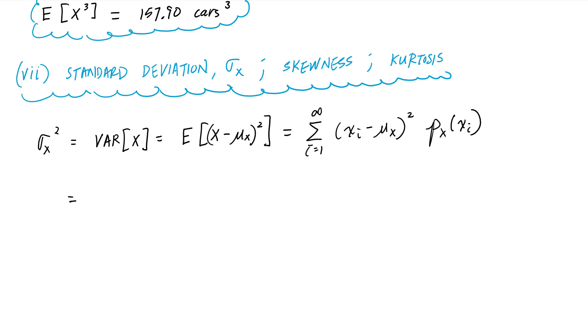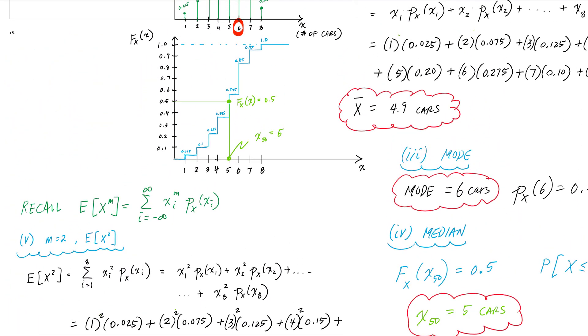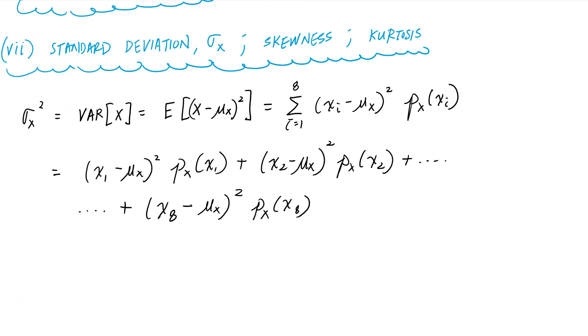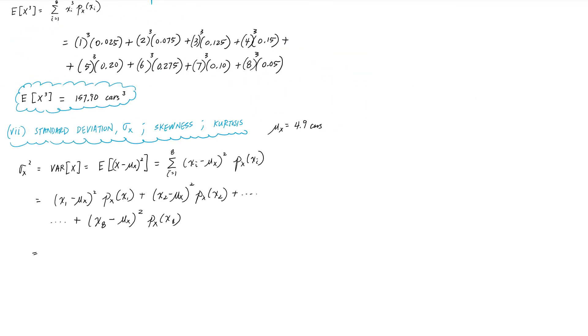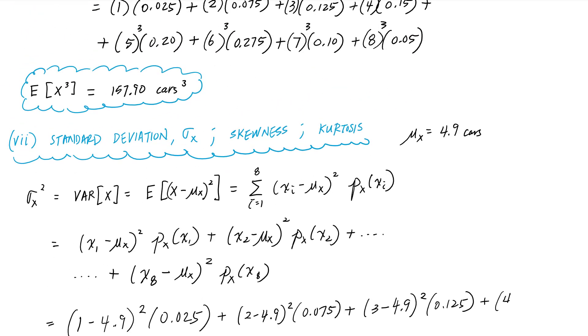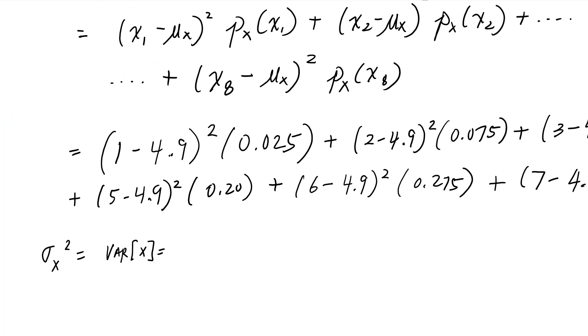And hopefully you're seeing how easy this could be in a spreadsheet. But I'm showing you the expanded forms here just for sake of completeness. We had calculated earlier that the mean is 4.9 cars. And if I go through each of these, we get 2.84 cars squared.